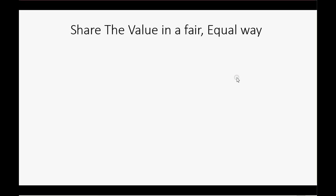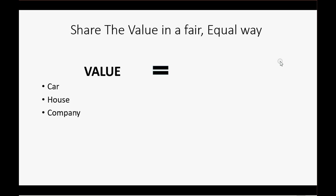The accounting equation was derived by measuring the value of something like a car, a house, or a company. All the assets of a company together have a value that you can measure. And the accounting equation created the idea of owner's equity when we assert that the value of these assets must be equal to who has a claim to the assets.